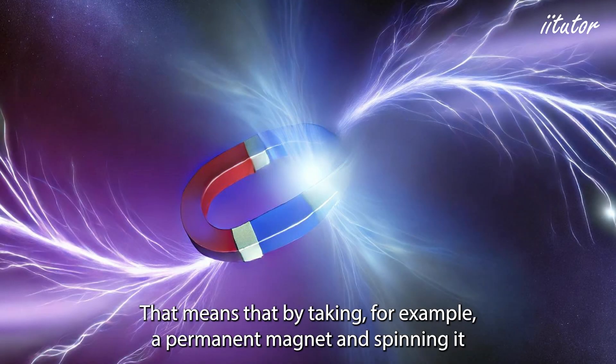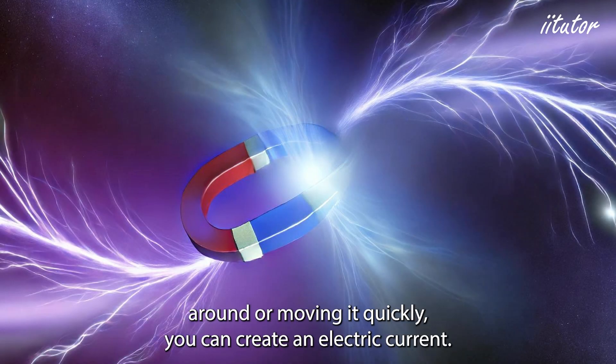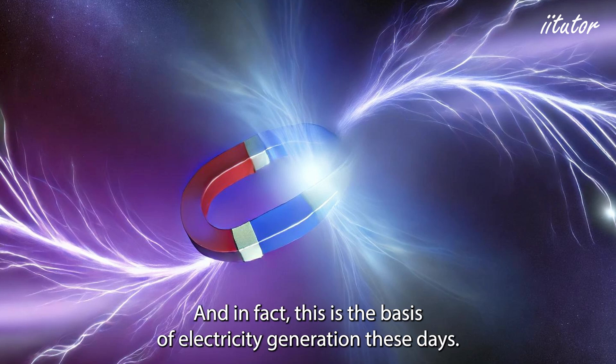That means that by taking for example a permanent magnet and spinning it around or moving it quickly you can create an electric current. And in fact this is the basis of electricity generation these days.